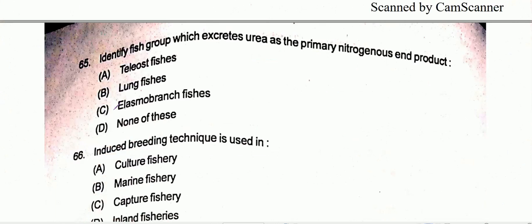Question number 65: Identify the fish group which excretes urea as the primary nitrogenous end product. Option C is the correct one, that is elasmobranch fishes.